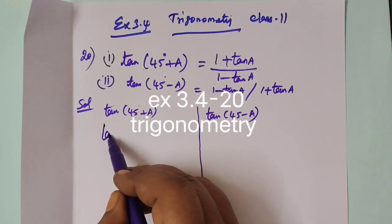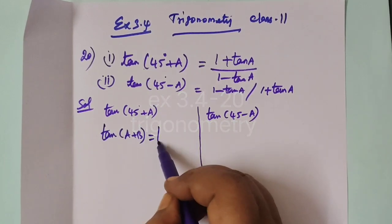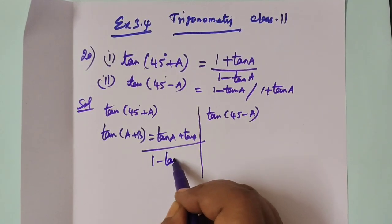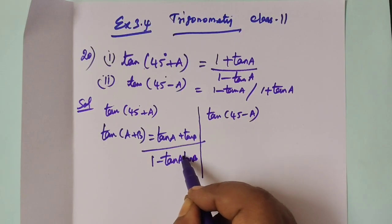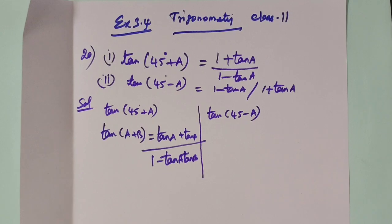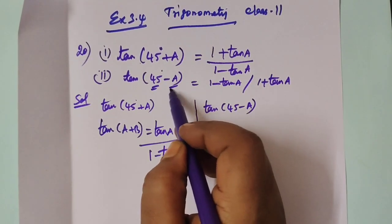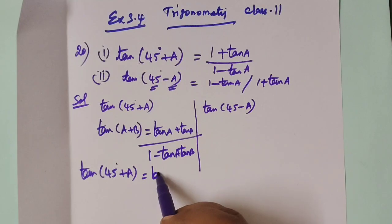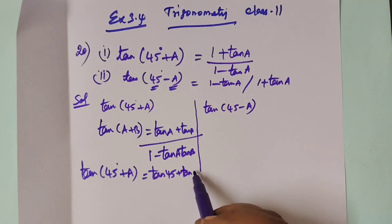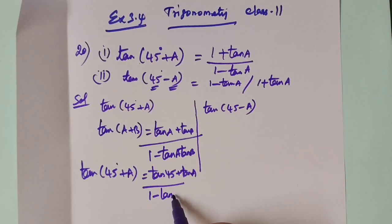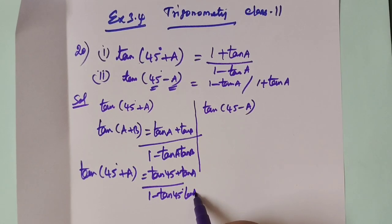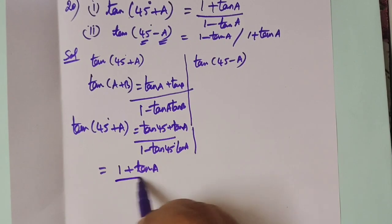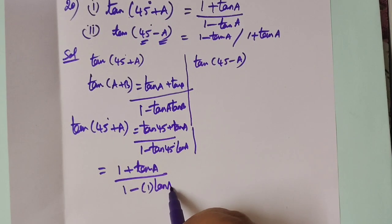For this, we are using the formula tan(a + b). So, tan(a + b) = (tan a + tan b) / (1 - tan a · tan b). So, tan(45 + a) = (tan 45 + tan a) / (1 - tan 45 · tan a). Since tan 45 = 1, this gives us (1 + tan a) / (1 - tan a).